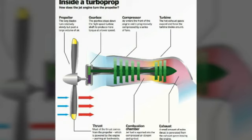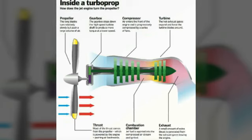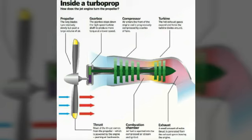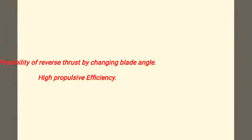The advantage of the turboprop engine is that it can produce higher takeoff thrust compared to turbojet and turbofan engines, because even at lower airspeeds it can extract a large mass of air and produce maximum thrust. I hope you got some idea about the turboprop engine. Thank you so much.